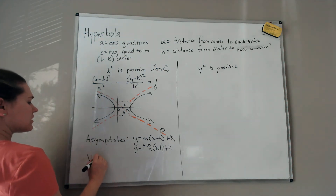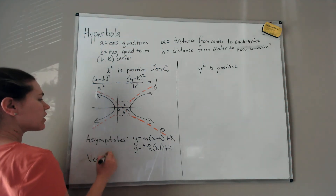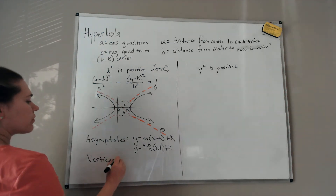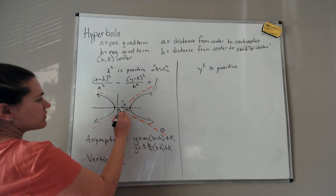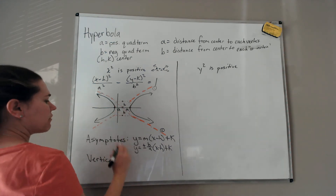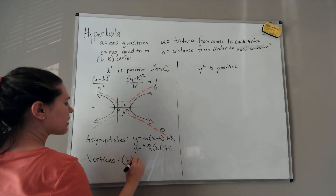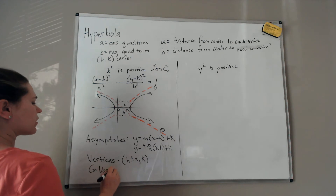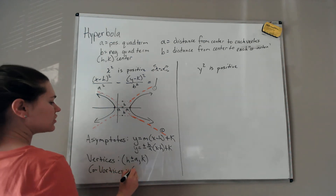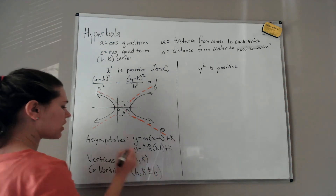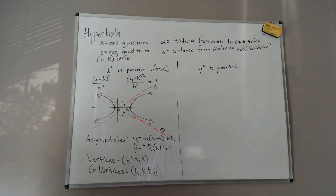The vertices fall on the hyperbola; the co-vertices do not. For the x-squared positive case, your vertices are at h ± a, k, since you move left and right from the center. Your co-vertices are at h, k ± b, since only the y-coordinate changes by b.